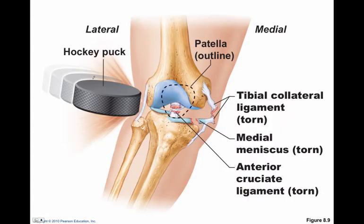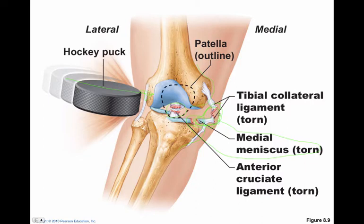A lot of knee injuries occur from lateral strikes — forces coming in from a lateral direction. As that rocks the femur and tibia medially, we can tear the MCL or TCL, the anterior cruciate ligament, and if severe enough, the posterior cruciate as well. The meniscus is also typically involved because of the close integration between the meniscus and the collateral ligament — a relationship not preserved in transverse sections, which is why it's usually torn in these injuries.